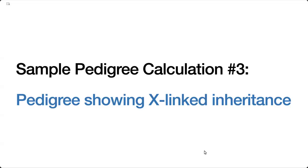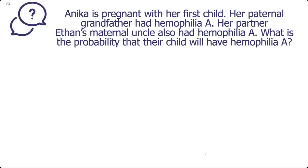Here is another sample probability calculation from a pedigree that shows X-linked inheritance. The question states: Anika is pregnant with her first child. Her paternal grandfather had hemophilia A, and her partner Ethan's maternal uncle also had hemophilia A. What is the probability their child will have hemophilia A?